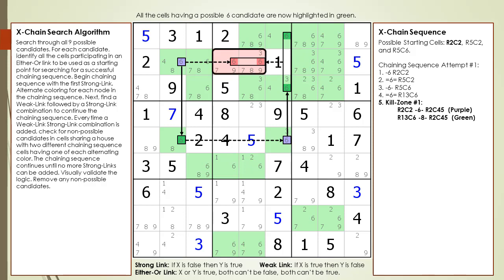The kill zone is defined the same way as before. Any cells sharing a house with cells having one of each alternating color is a non-possible candidate.